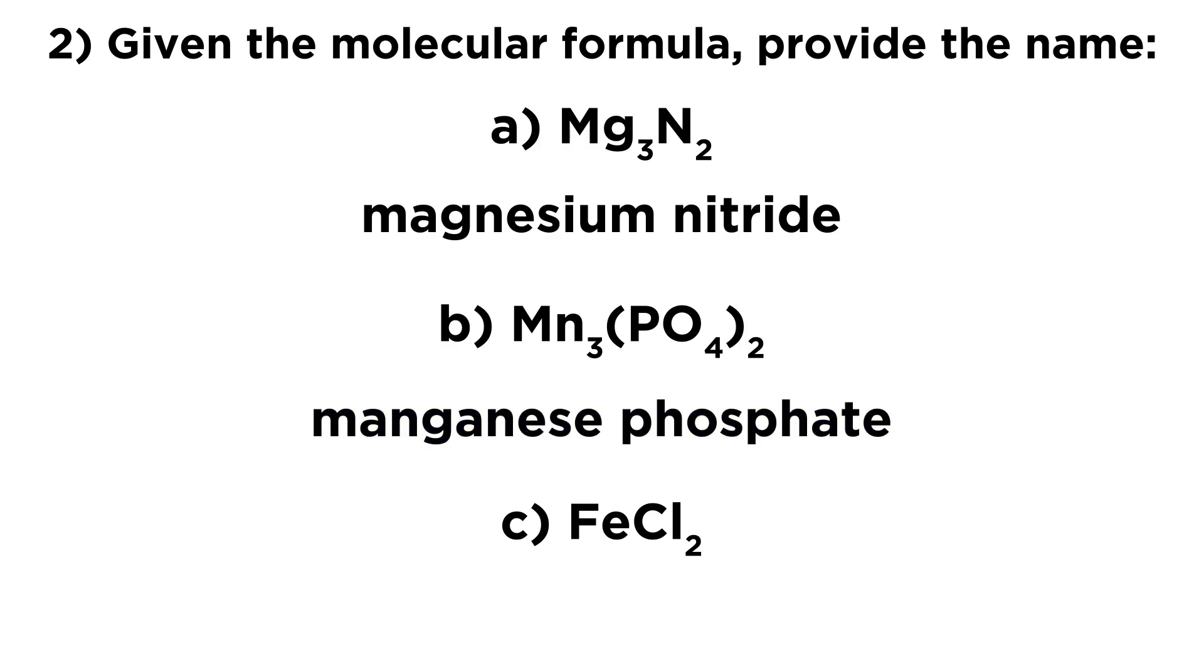And lastly, FeCl2. We are not sure immediately what kind of iron ion this is. But let's look at the anion first. We have two chloride ions. Those are Cl minus anions. Those each have a minus one charge.